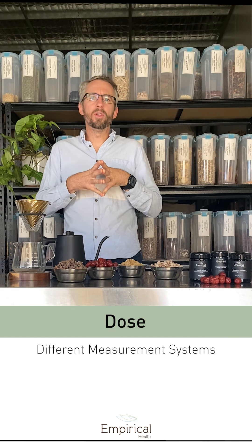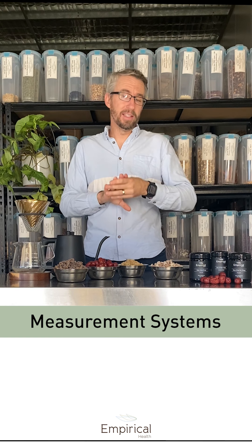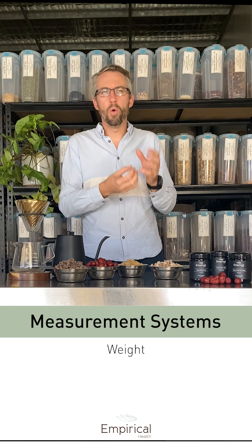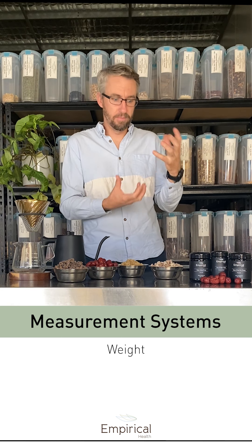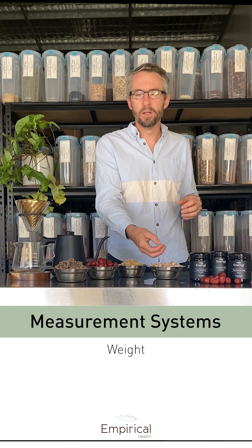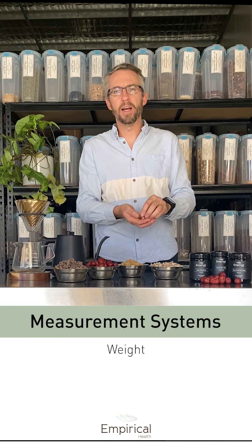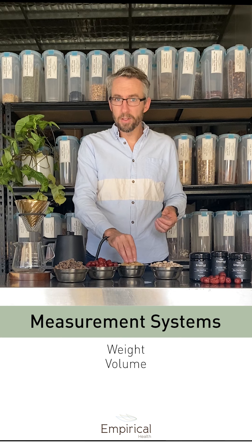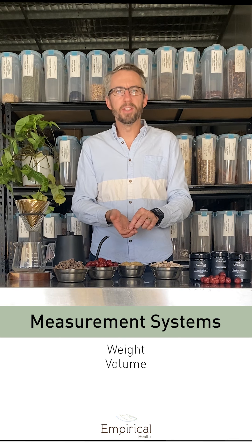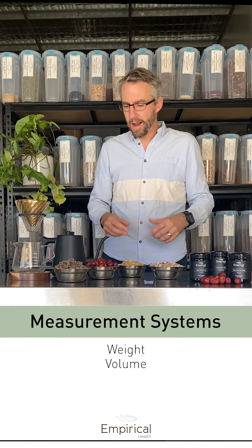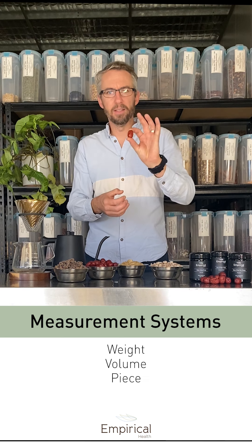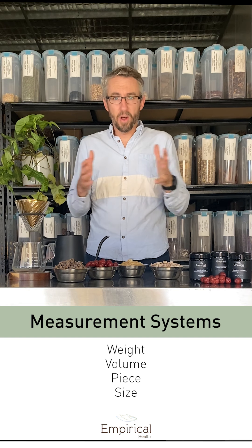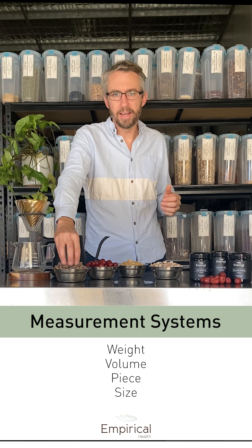There are four categories of measurements in the Shang Han Lun. The first is a weight measurement — what a particular herb weighed on a scale. Herbs like Xiao Yao, split into Bai Xiao and Xu Xiao, and Chai Hu are examples of weight measurements. Then there's a volume measurement — something like Ban Xia or Huo Ma Ren. Then you had a piece measurement, such as Da Zao or Hong Zao, and finally a size measurement, like a particular piece of bark — for example, Hou Po.